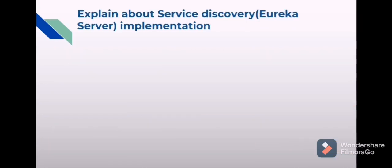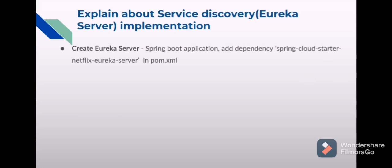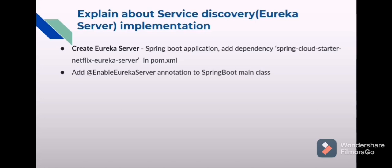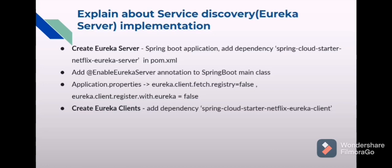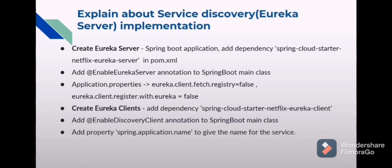For service discovery implementation, we need to do two main things: create a Eureka server and create Eureka clients. For creating a Eureka server, it is a normal Spring Boot application — we need to add the dependency 'spring-cloud-starter-netflix-eureka-server' in pom.xml, then add the @EnableEurekaServer annotation in the Spring Boot main class, and add two properties in the application properties file. Every Eureka server acts itself as a client, so to avoid that we set those properties to false. For Eureka clients, add the dependency 'spring-cloud-starter-netflix-eureka-client', add the @EnableDiscoveryClient annotation, and add the property spring.application.name to give the service a name — with this name it gets registered to the Eureka server and can be called by this name.